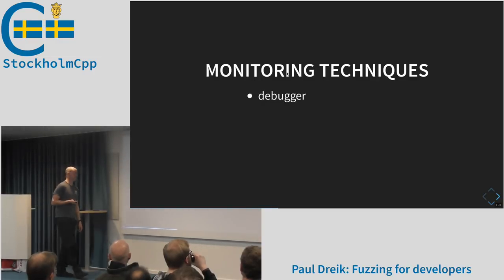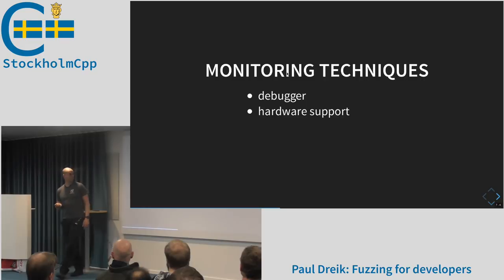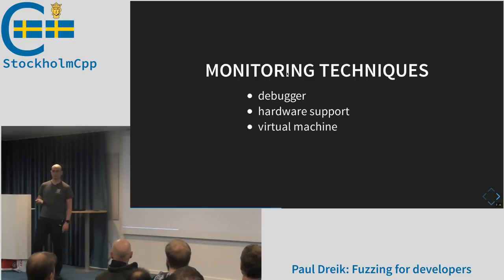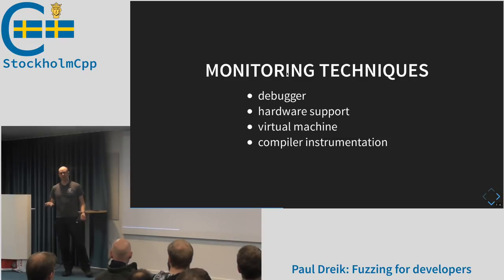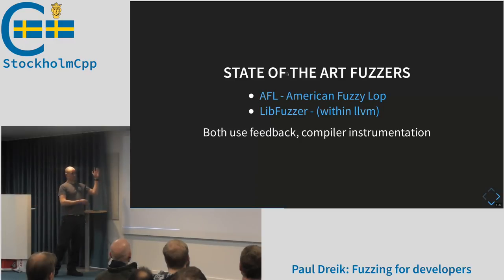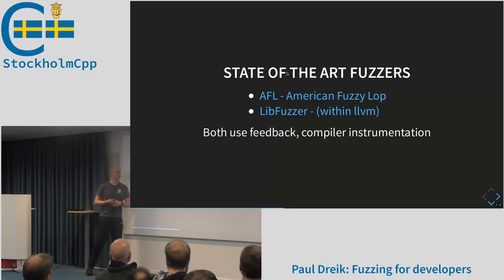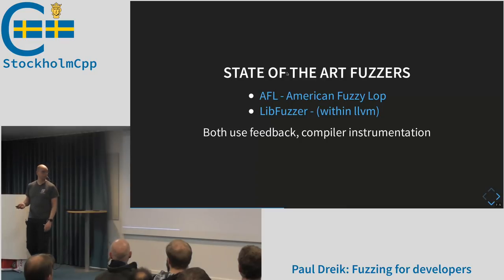How do you monitor the program? Early fuzzers used a debugger — like a debugger monitoring programs — which is slow. You can use hardware support if you have a recent Intel CPU, or run in a special instrumented virtual machine, or use compiler instrumentation: when you compile the program, you insert extra statements that do the tracing for you. Taking everything we've learned, two state-of-the-art fuzzers are AFL — American Fuzzy Lop — and libfuzzer, which is included in the LLVM project. Both use feedback and compiler instrumentation, so you need source. AFL also has a binary mode through QEMU.